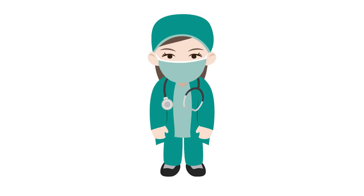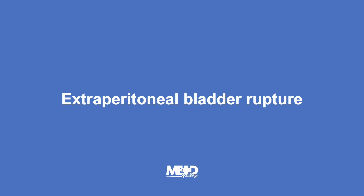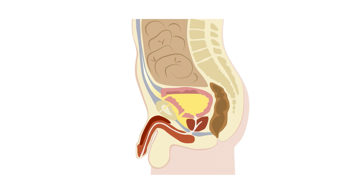Surgical repair is used to treat intraperitoneal bladder ruptures. Now let's consider extraperitoneal bladder ruptures. Extraperitoneal bladder rupture is often associated with pelvic fractures. The bladder usually ruptures anteriorly into the extraperitoneal space in front of the bladder, also known as the pre-vesicle space or space of Retzius, and urine does not spill freely into the abdominal cavity.